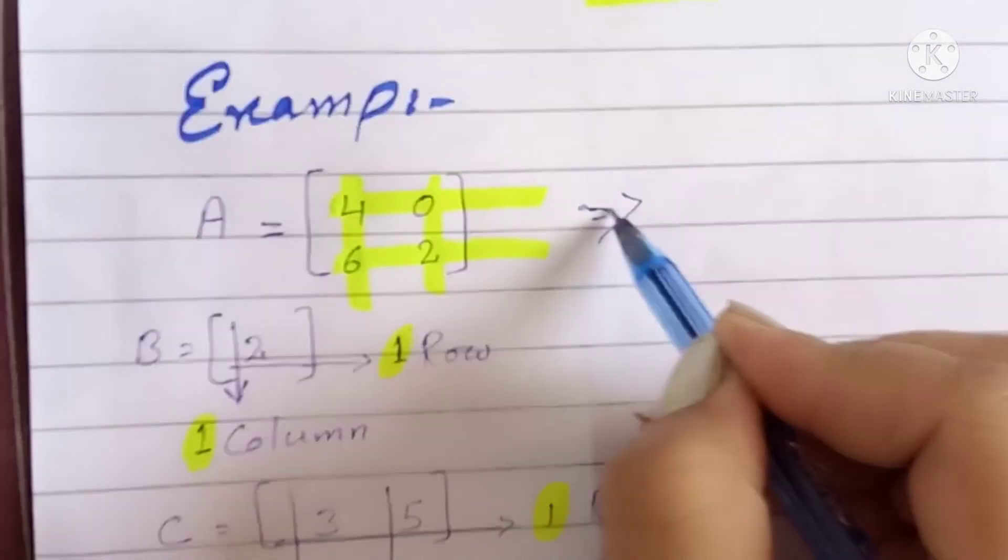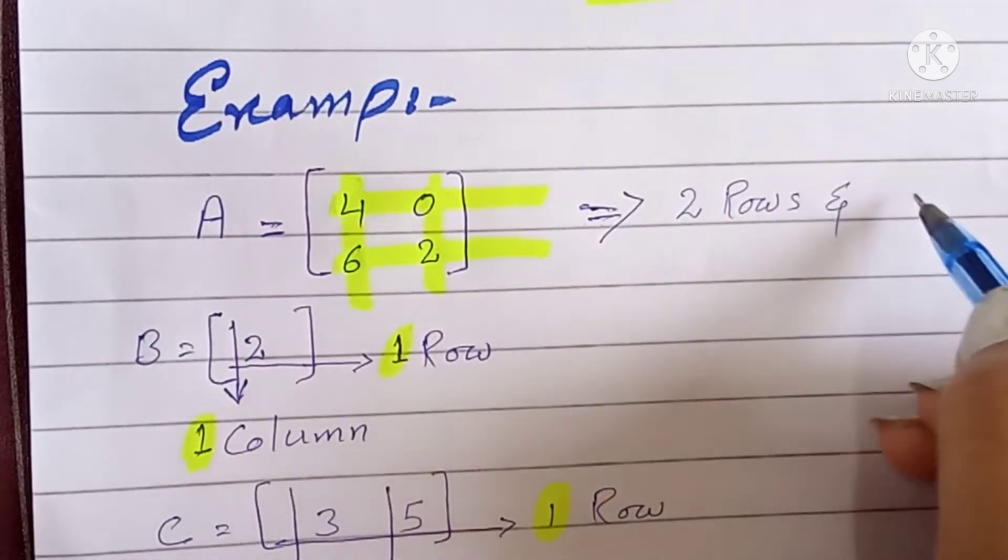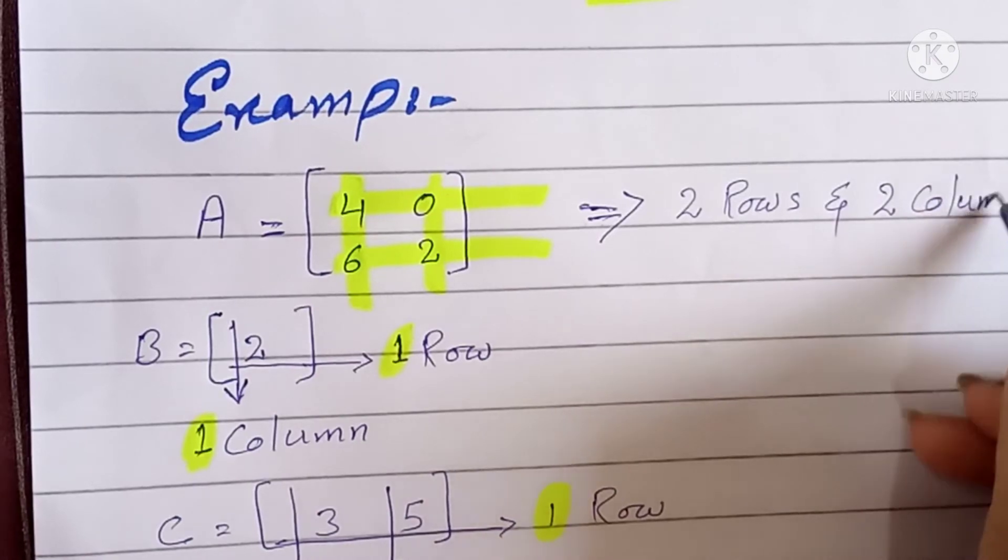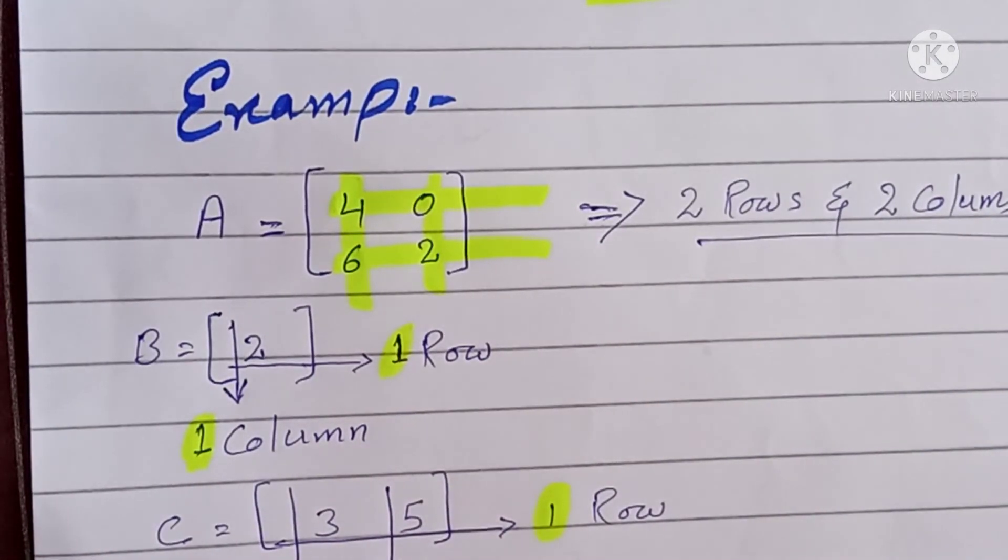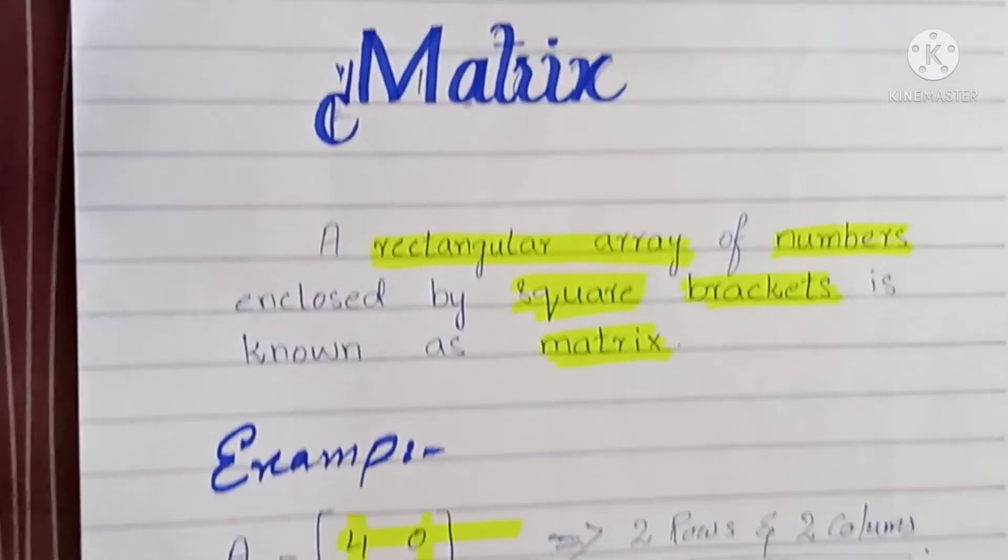Number of rows and number of columns are very important to find order of a matrix. I have explained order of a matrix in the next video.